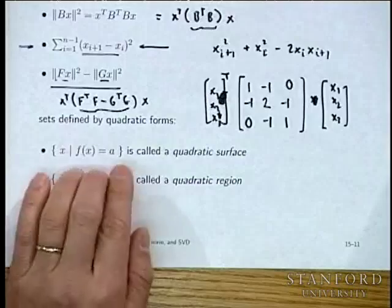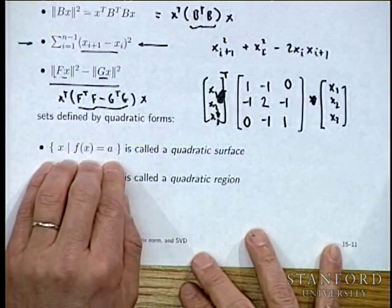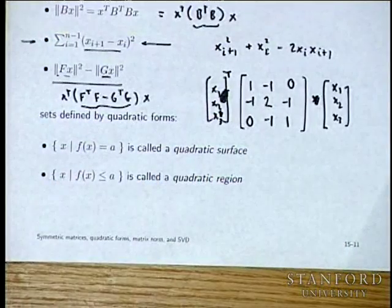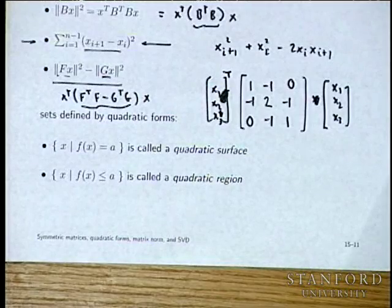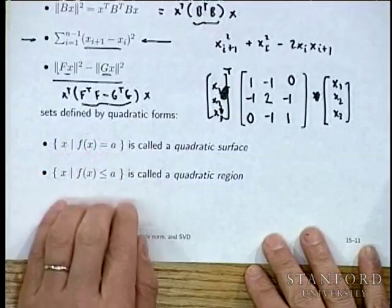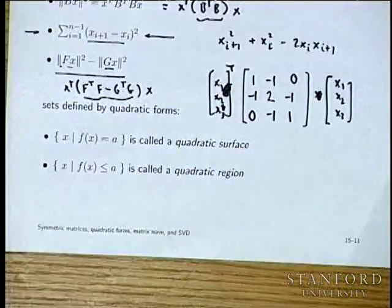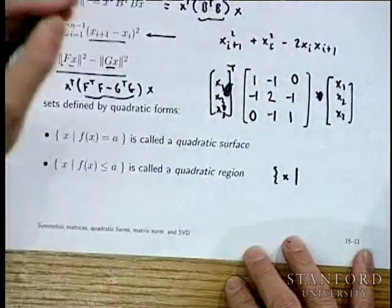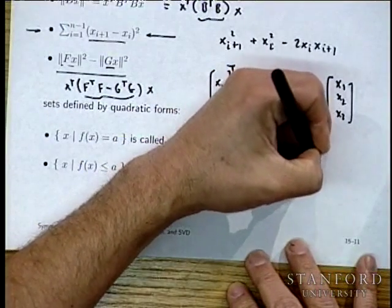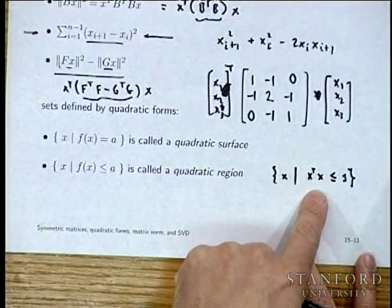A level set of a quadratic form — the set of points where it equals a constant — is called a quadratic surface. A sub-level set is a quadratic region. An important example is the unit ball in R^n: the set of x for which X transpose X is less than 1, where the A matrix is the identity I.